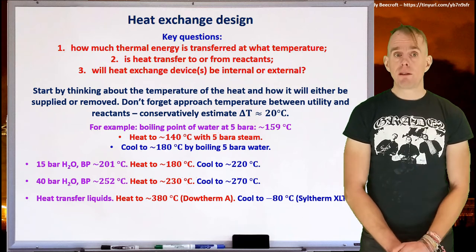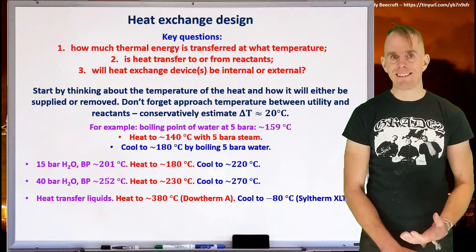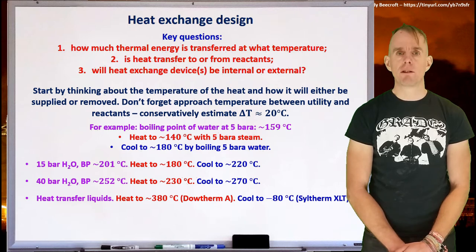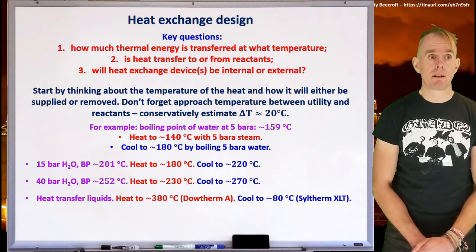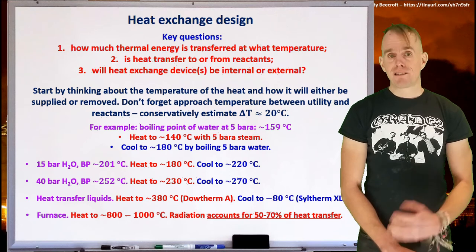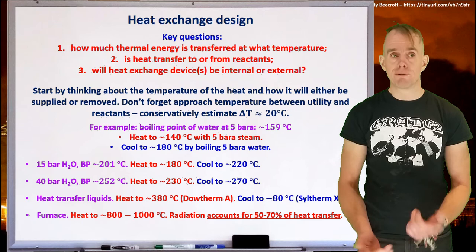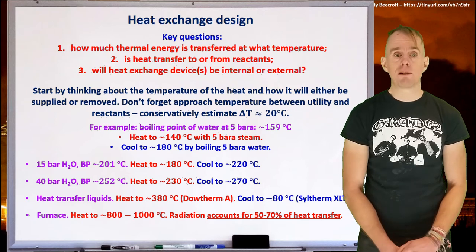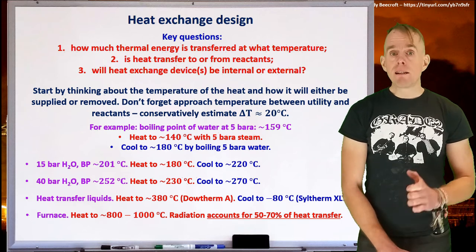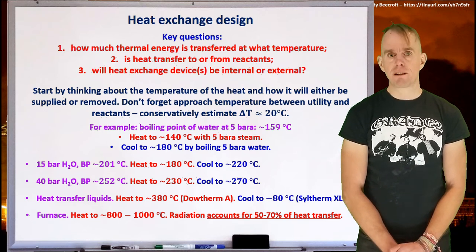As a cooling fluid, you can use Siltherm XLT, and that will allow you to cool to about minus 80, which is a lot lower than, say, some of the brine systems that you may commonly find. If you need to get heat at a higher temperature than around 380, 400 degrees C, then you have to go for a furnace. And so furnaces will allow you to heat up to maybe 1,000 degrees C. And radiative heat transfer accounts to probably up to 70% of the heat transfer that's used.